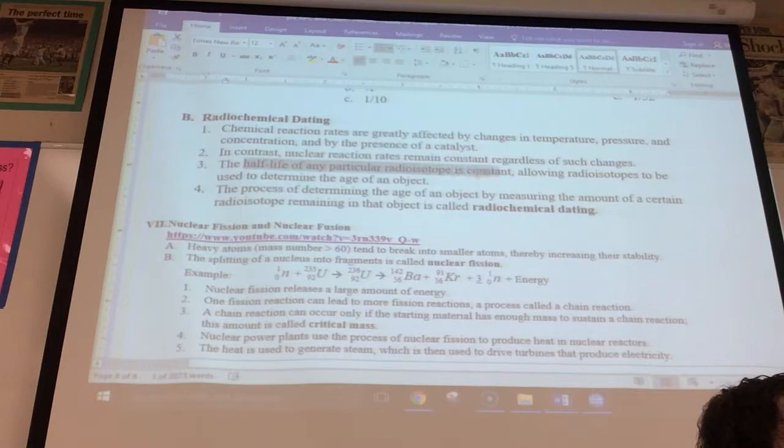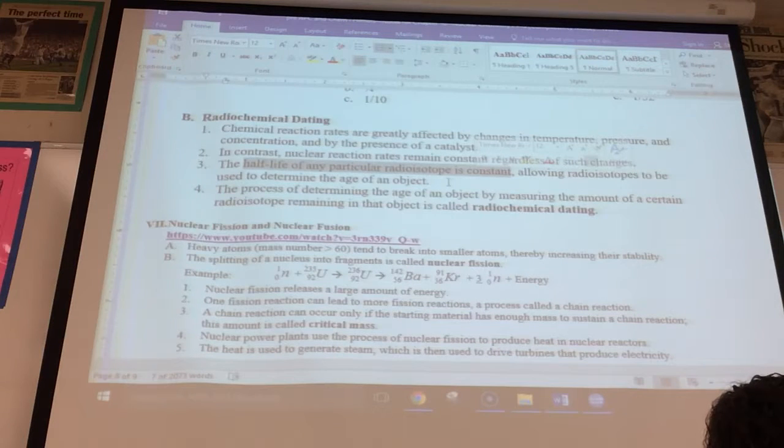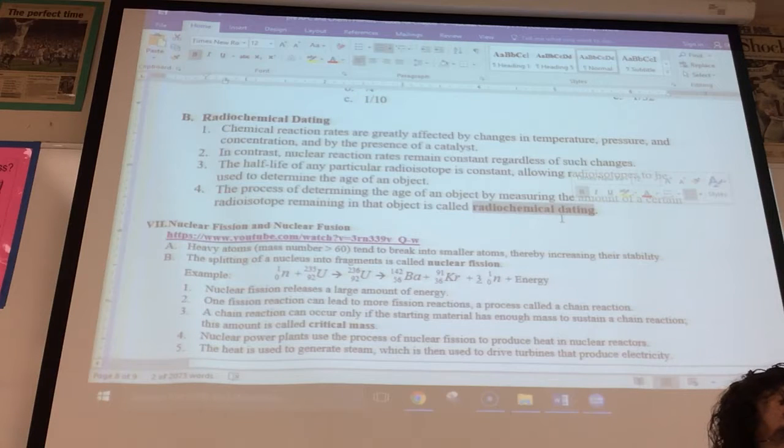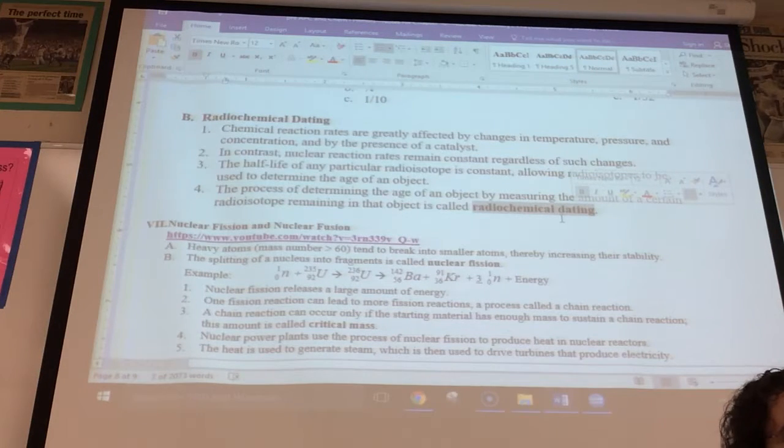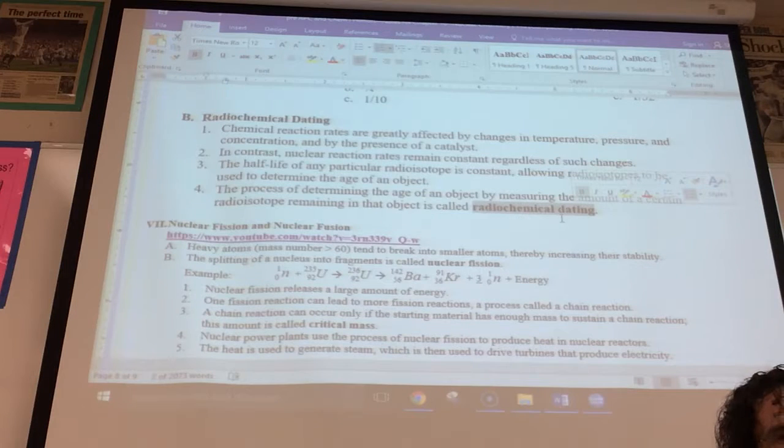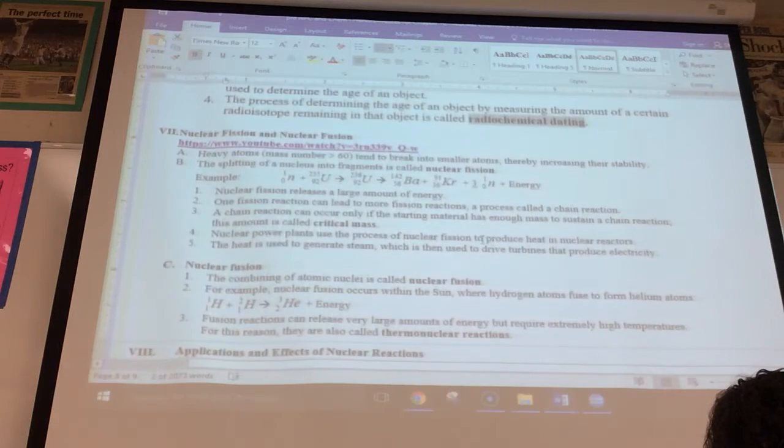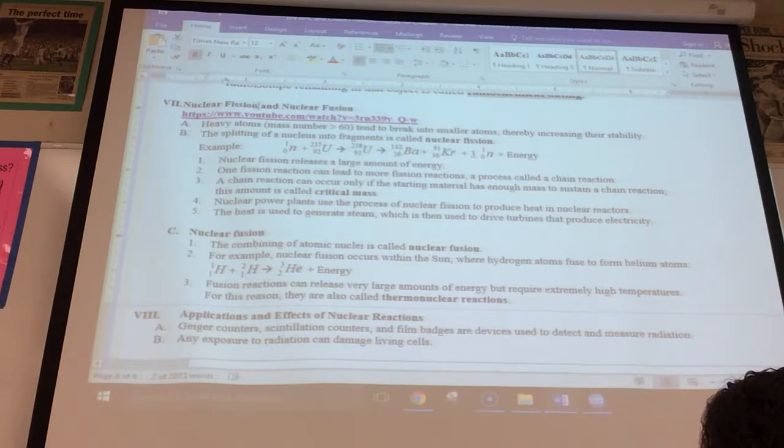You don't see changes in nuclear reaction rates when you make these types of changes. Half-lives for radioisotopes are constant, and so you can use radioisotopes to age or determine the age of an object, and when you do that, it's referred to as radiochemical dating. And again, the best example I can think of is something you would have probably looked at in earth science, which would be C14 dating. The last piece of the puzzle I want to mention is nuclear fission and nuclear fusion.